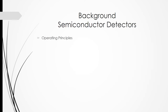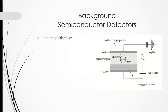There are a few things that we have to understand about semiconductor detectors. Here we have a schematic diagram of a semiconductor detector. When a bias voltage is applied, the thickness of the depletion region inside the semiconductor will be increased.